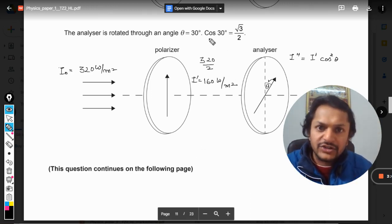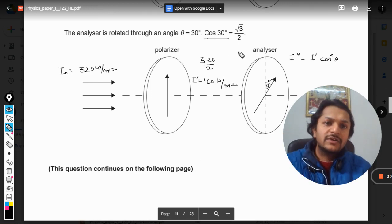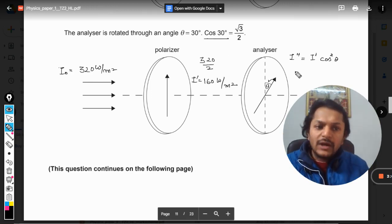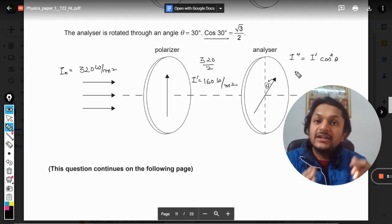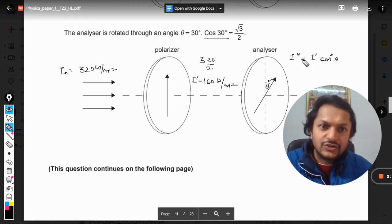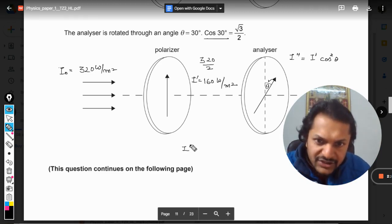And theta is the angle between the axis of polarizer and the axis of the analyzer, which is given as theta, that is 30 degrees for us. And the value of cos theta is also given. And the question is what is the intensity of light when it comes out of the analyzer.